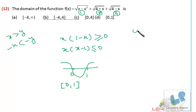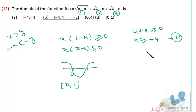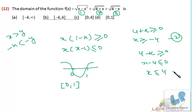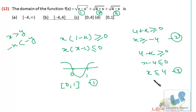From the second condition, 4 plus x should be greater than or equal to 0, that means x should be greater than or equal to minus 4. From the third condition, 4 minus x should be greater than or equal to 0, that means x should be less than or equal to 4. Now we have to club all three conditions. All three must be satisfied simultaneously — x between 0 to 1, x greater than minus 4, and x less than or equal to 4. All three conditions are satisfied in 0 to 1. So your final answer will be from 0 to 1.